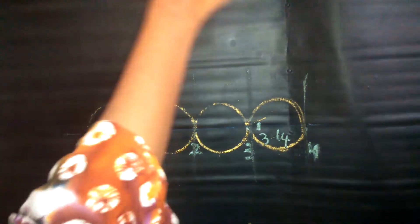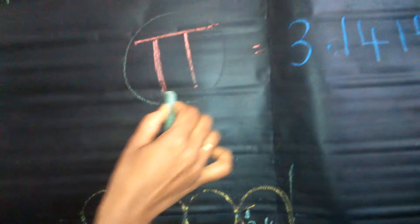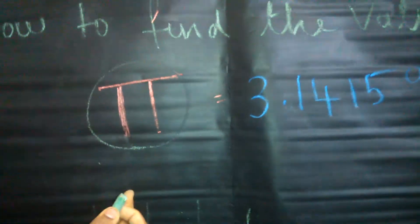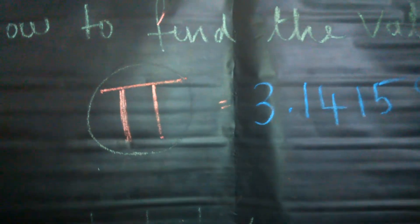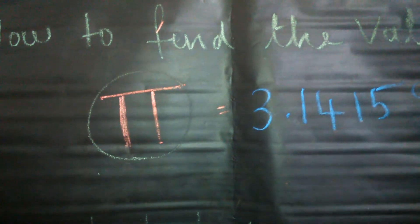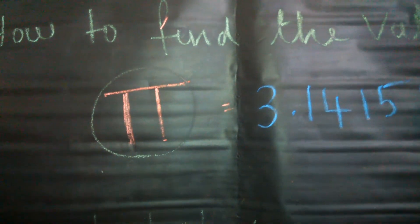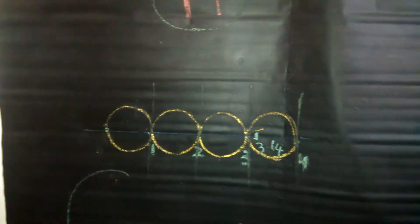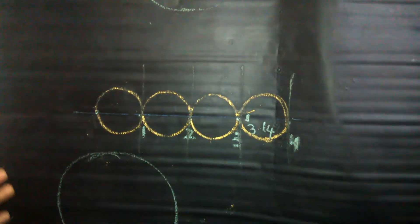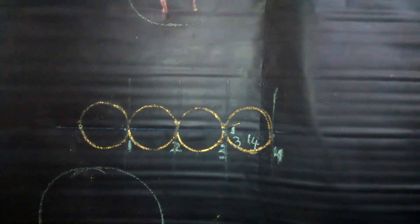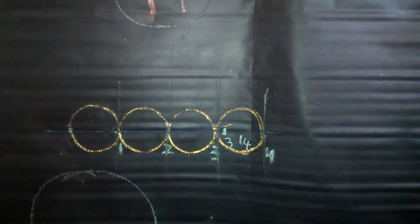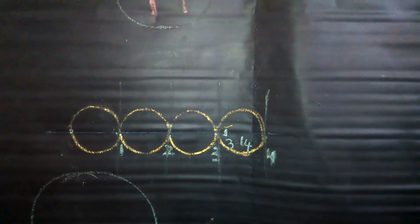This pi value — we cannot mention it in meter or centimeter or decimeter. It is not like that. This pi is a value, it is 3.14, it is a constant. Either it is a small circle, either it is a big circle, or you can say it is a big universe — the value of pi is 3.14, it is a constant value. We cannot change it.